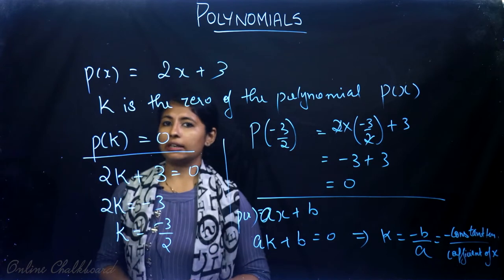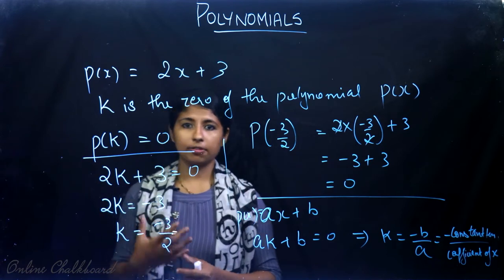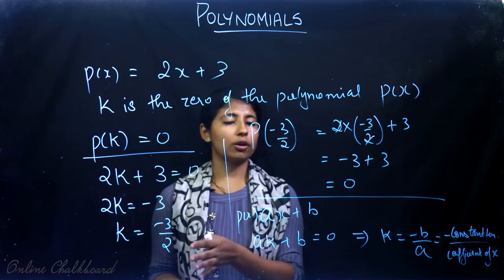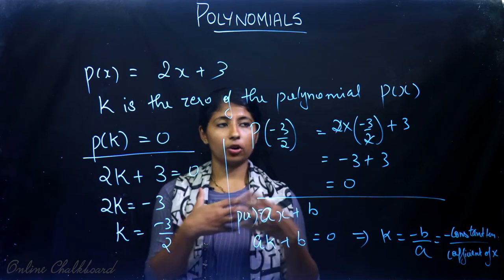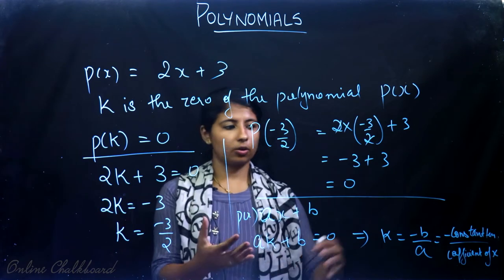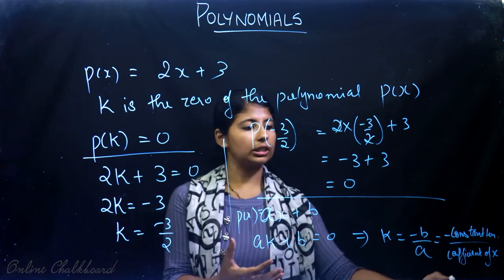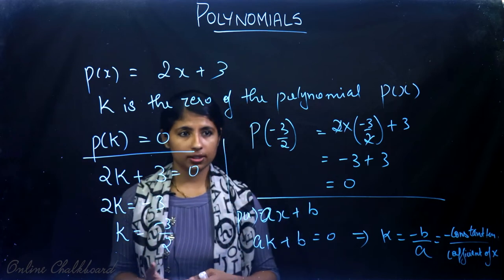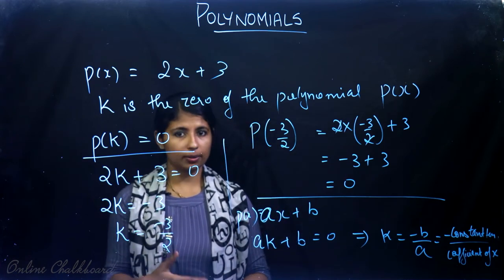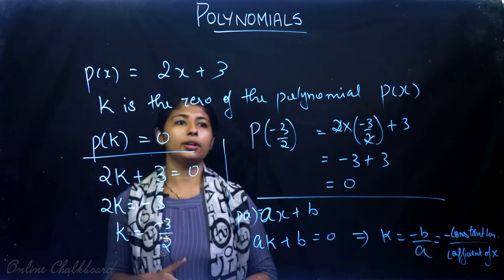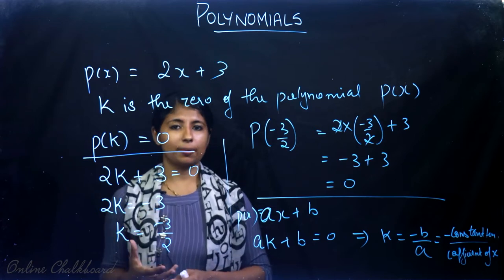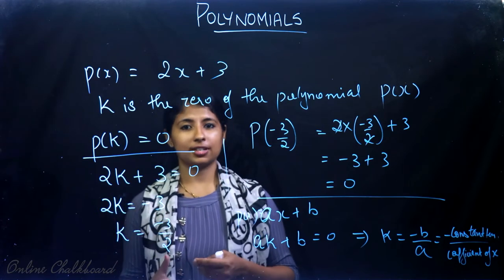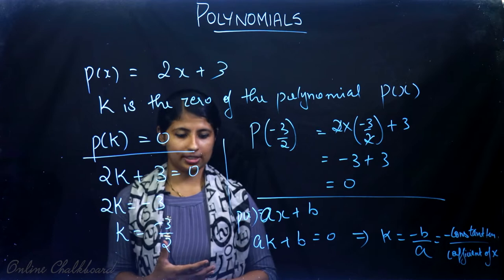Can we find a similar relation between the roots of a quadratic polynomial and its coefficients? We will see that in the coming section. But first, let's discuss the geometrical representation of the zeros of a polynomial.